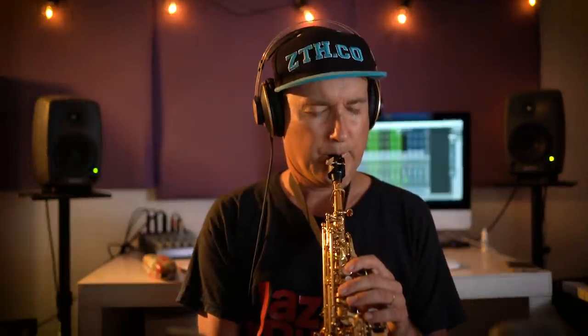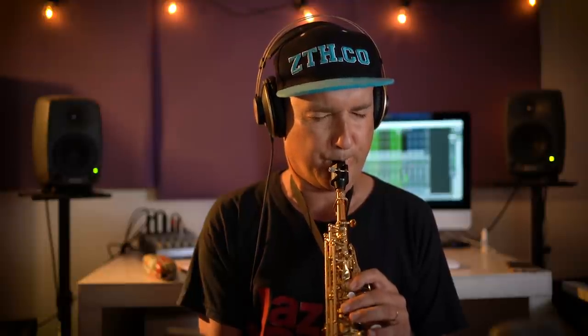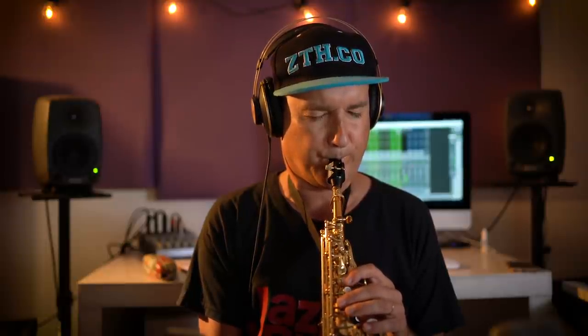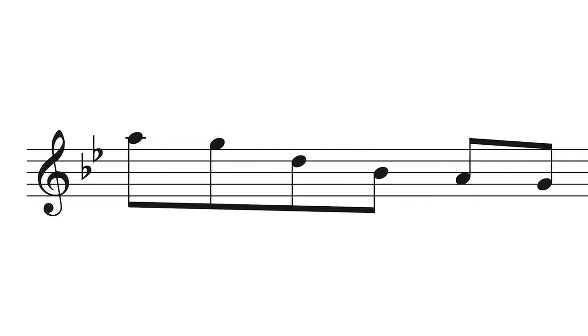So here again is the lick. This references the classic Cry Me A River. It is made up of just four notes of the minor scale: the 9th, the root, the 5th, and the minor 3rd.